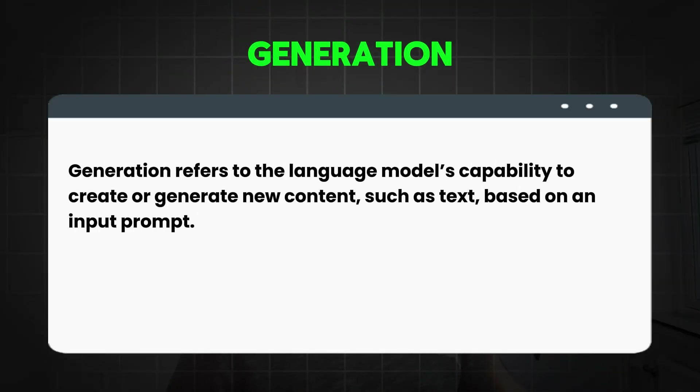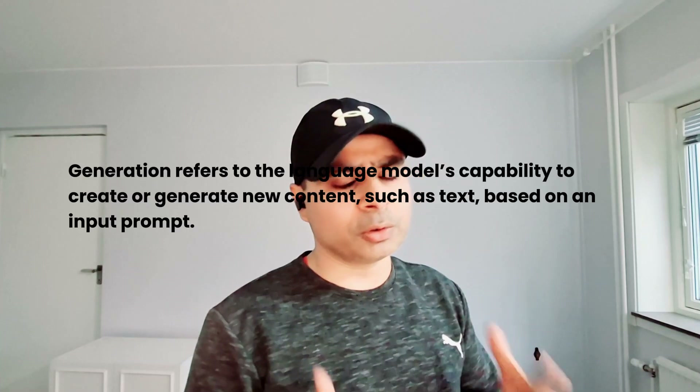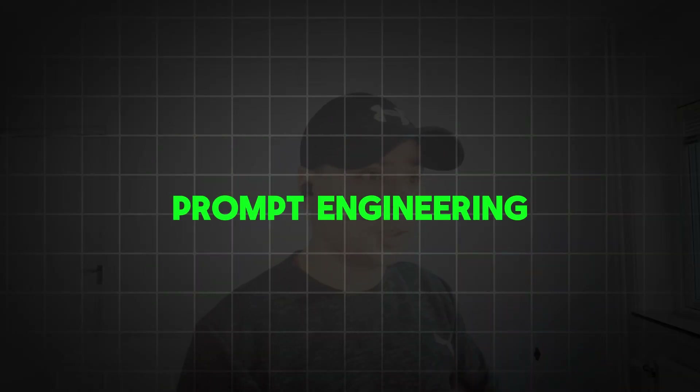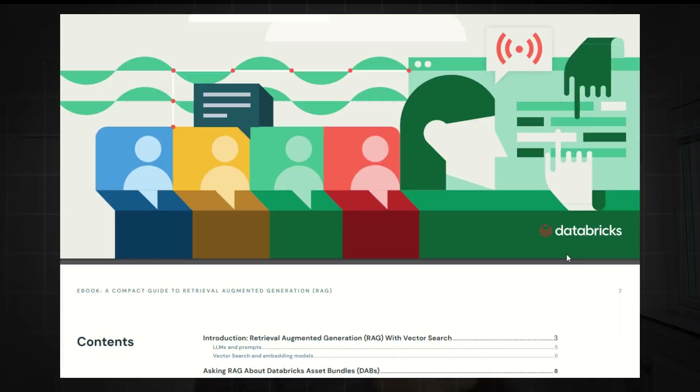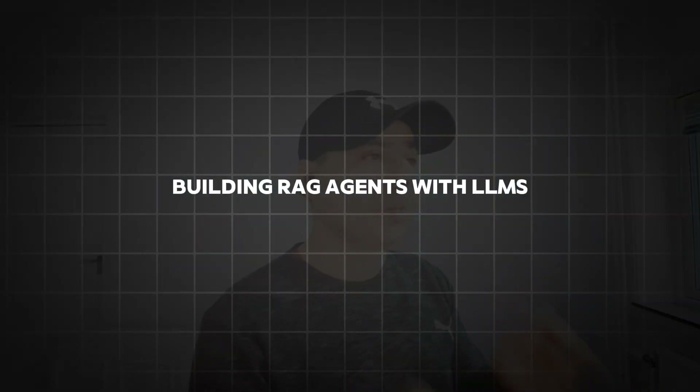Generation is the most interesting part — the actual response from the generative AI. Generation refers to the language model's capability to create new content such as text based on the input prompt. It can also generate music, videos, images, and more. All these outputs depend on prompt engineering — and I will be talking about a very interesting course on prompt engineering in this video. Generation involves using a model like a large language model or LLM to produce responses in natural language. To further help you understand RAG, you can also download a free ebook from Databricks — the link is in the description.